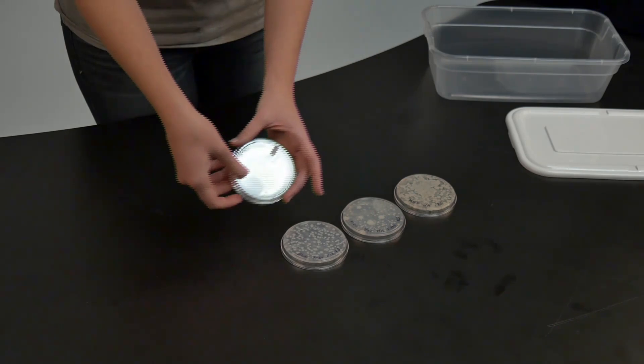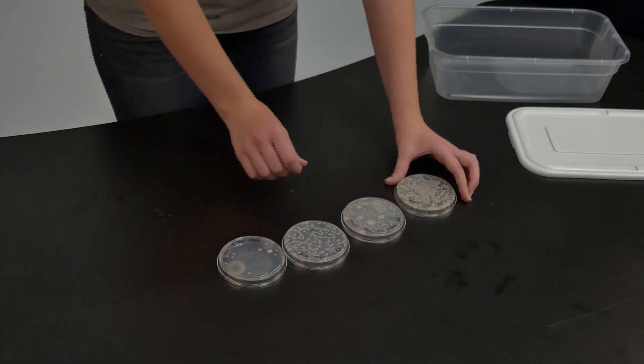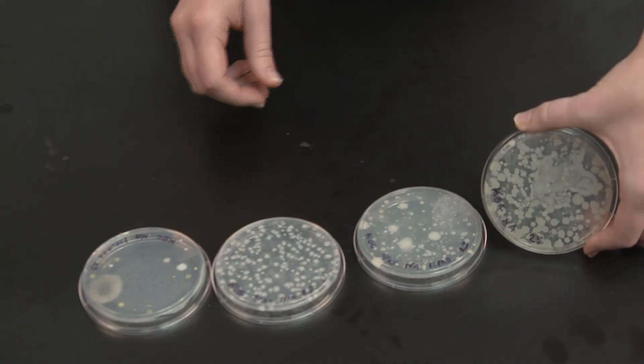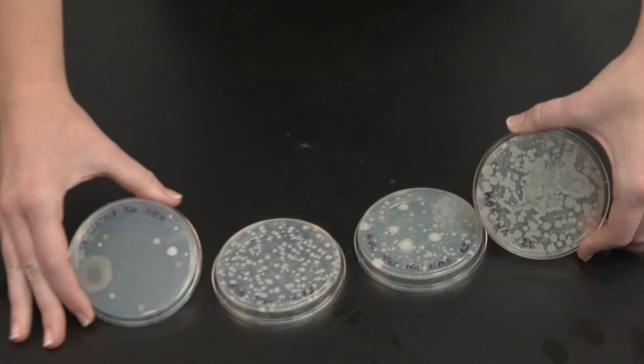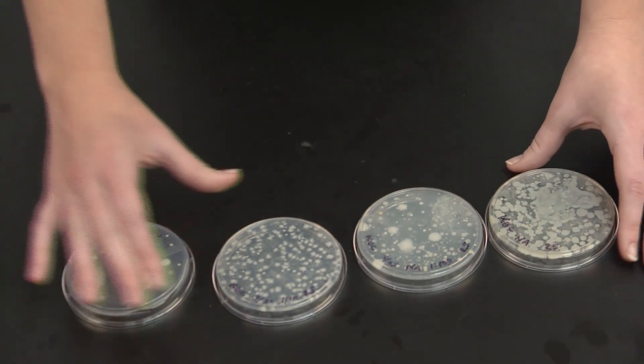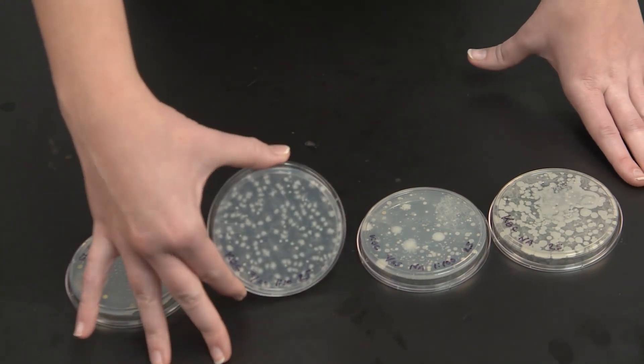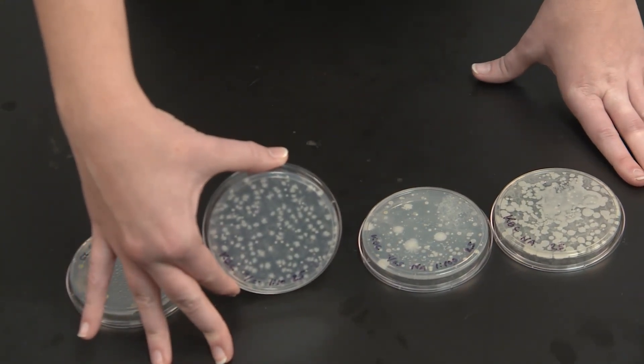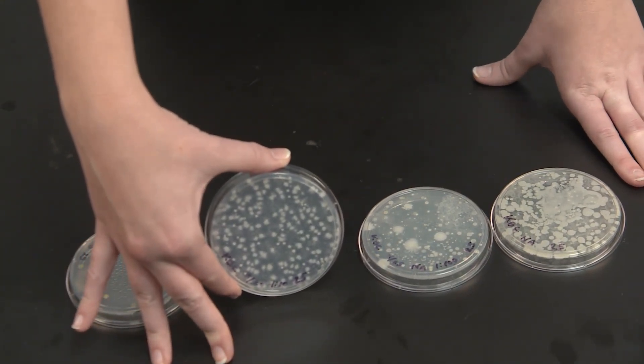Because of the dilutions that we used, you will notice that some of your plates will have a tremendous amount of growth, whereas others will have very little growth. In order to make an accurate counting of the bacteria growing in your soil sample, we ask that you choose a plate that has between 30 and 300 colonies growing on it.